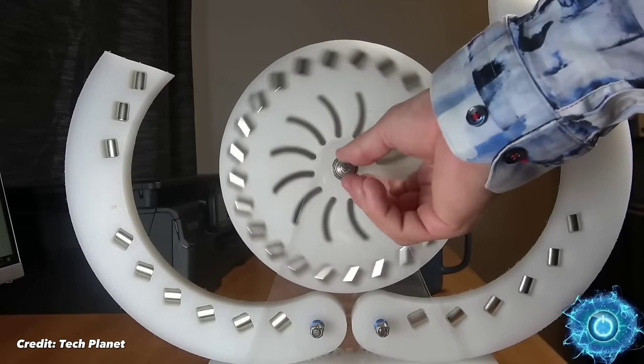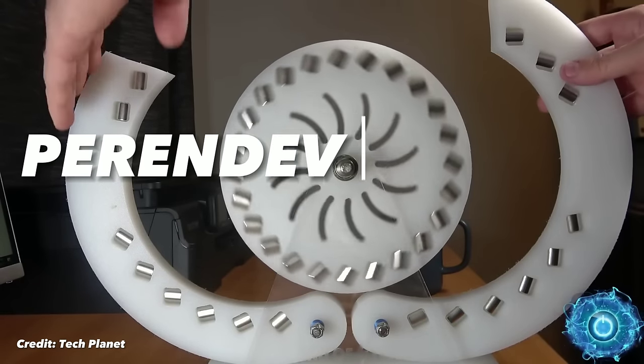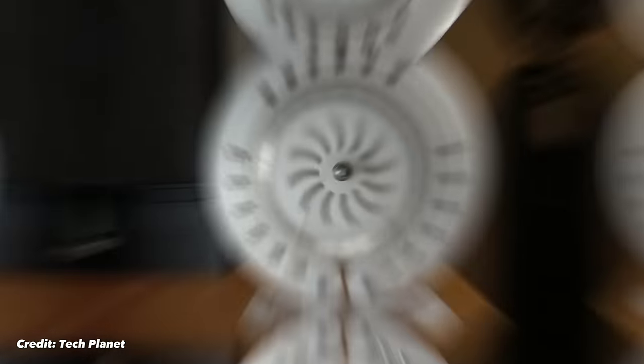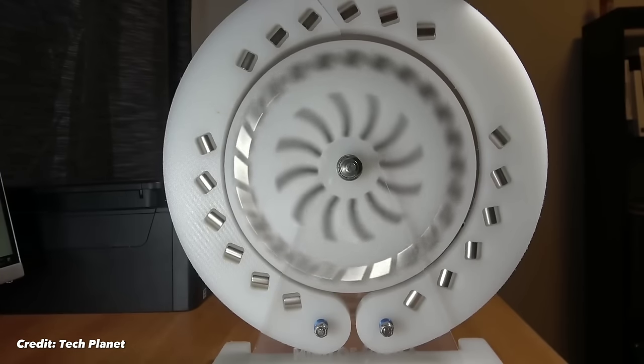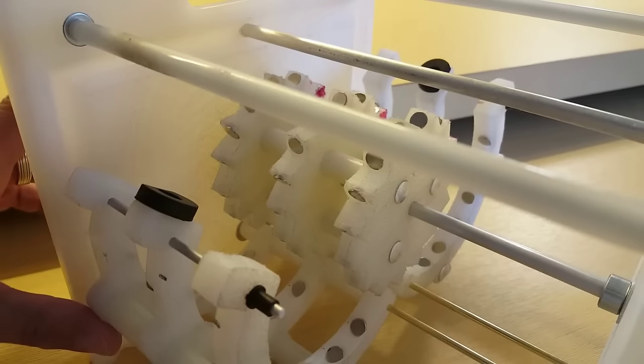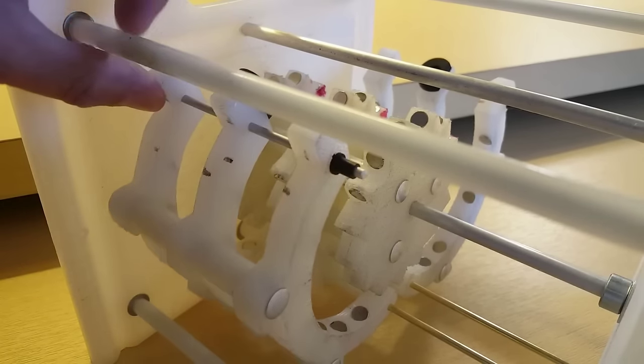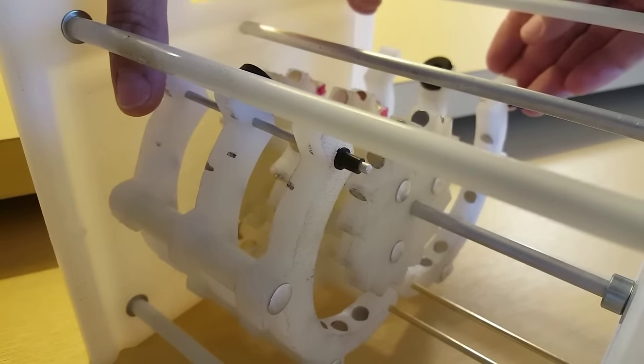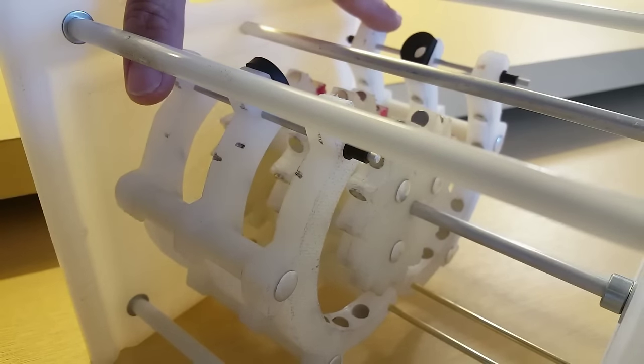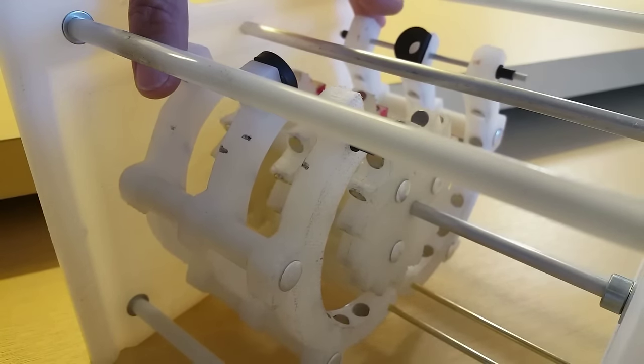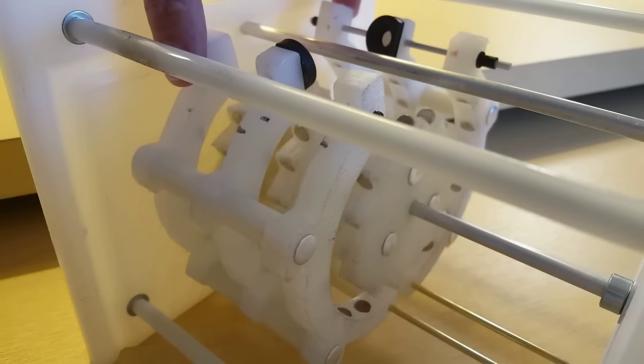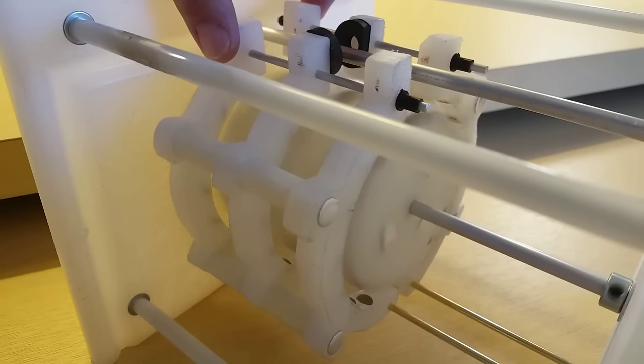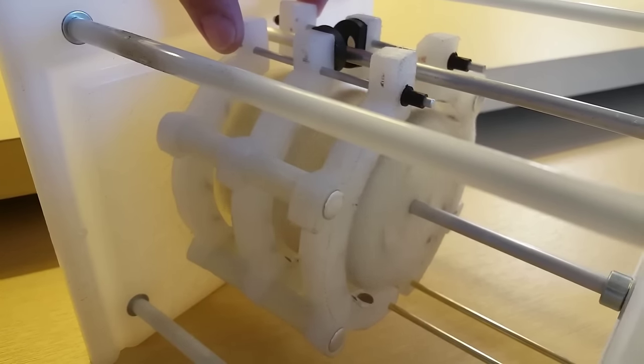Another example of a magnet motor is the Perendiv motor. This motor was invented by Mike Brady, a South African inventor, who claimed that his motor could produce 20 kilowatts of power without using any fuel or external source of energy. The Perendiv motor consists of several disks that have magnets arranged in a circular pattern. The disks are mounted on a shaft that is connected to a generator. The magnets on each disk are aligned in such a way that they create a repulsive force between them and cause the disks to rotate. The rotation of the disks drives the generator and produces electricity.